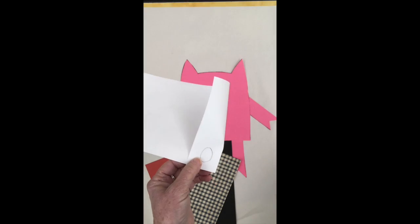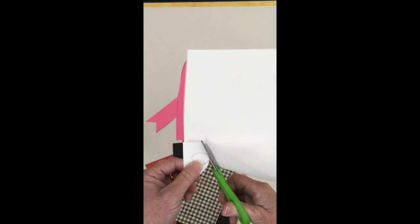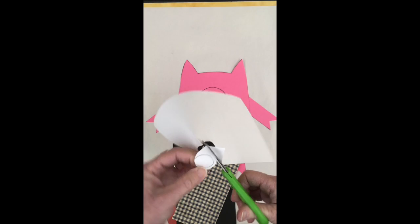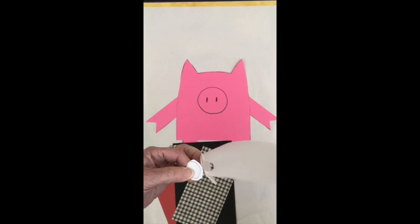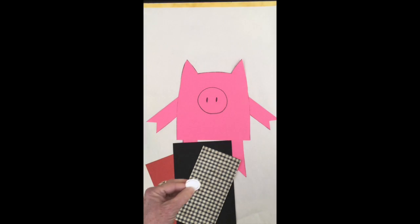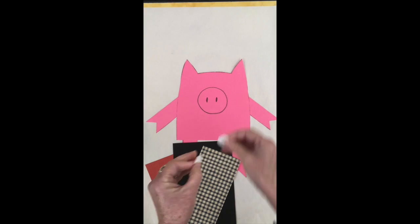I'm going to draw a circle and fold it and cut through two pieces of paper at one time. Wow! And that helps me make a couple of eyeballs.